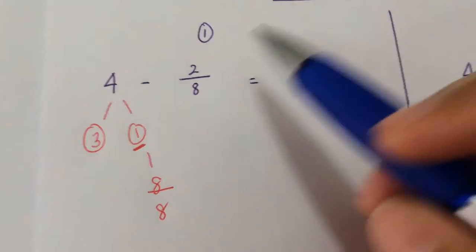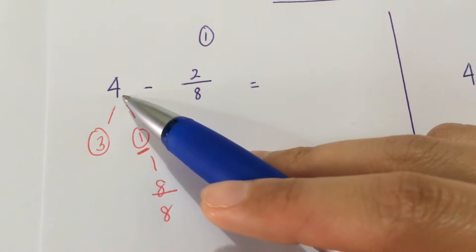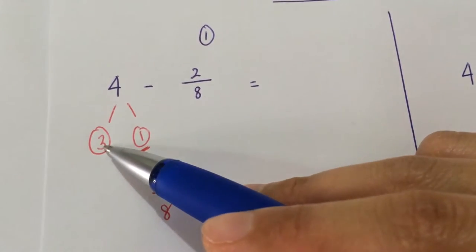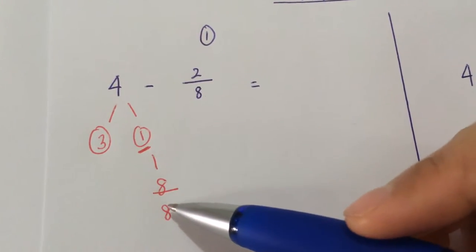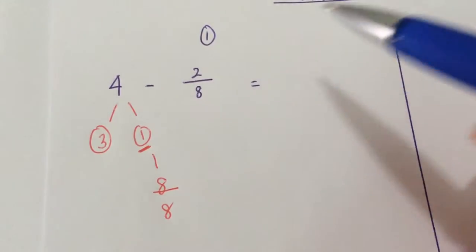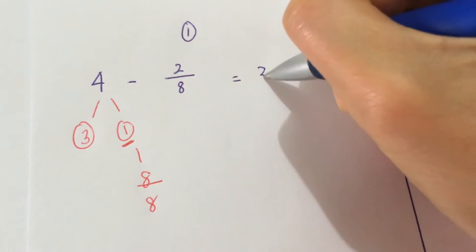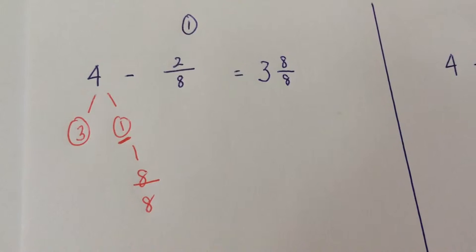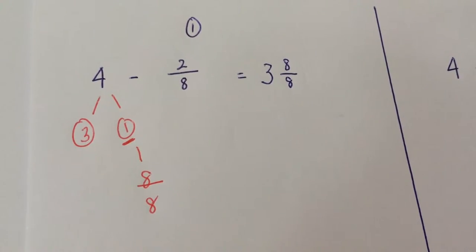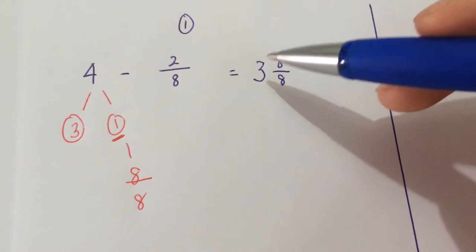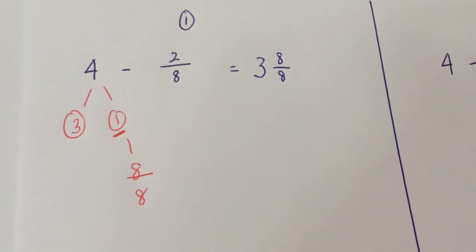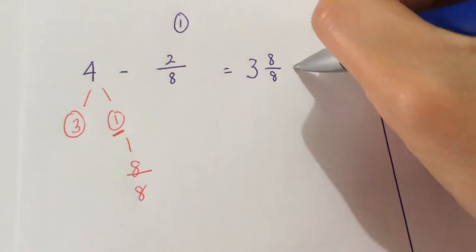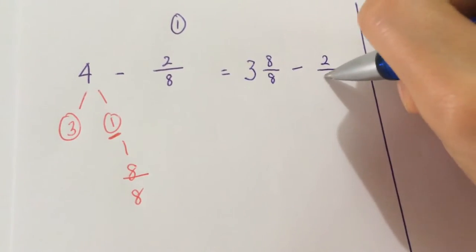So 4 whole has been rewritten as 3 whole and 8 out of 8. I'm just going to rewrite it on this side here. 4 whole is now 3 whole and 8 out of 8. This is still 4. 3 and 1 gives you 4. Alright, minus 2 out of 8.